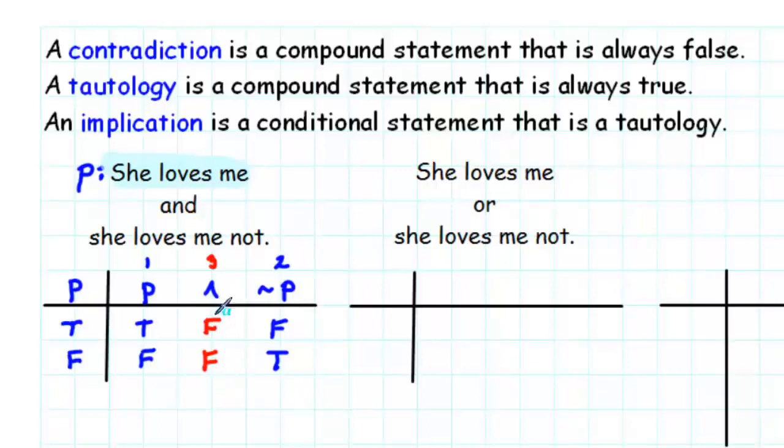So, we see that in each case, the result is false. That means that she loves me and she loves me not is a contradiction.